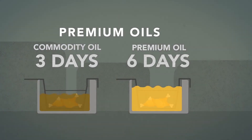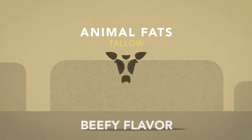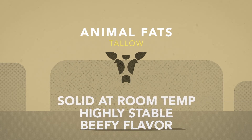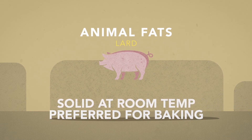Then there are animal fats or non-vegetable shortenings. Tallow comes from cows and has a beefy flavor, is highly stable, and is solid at room temperature. Lard is preferred for baking and is solid at room temperature.